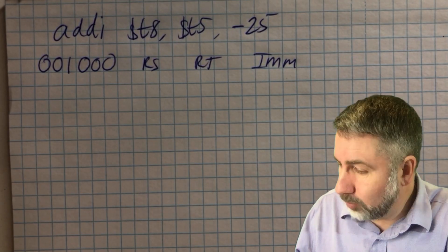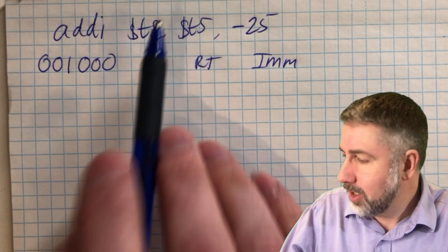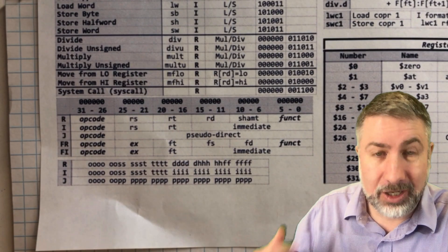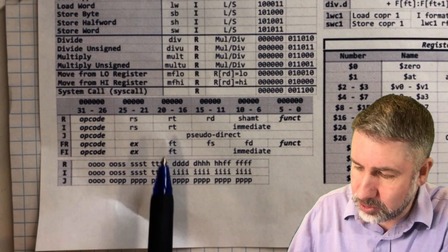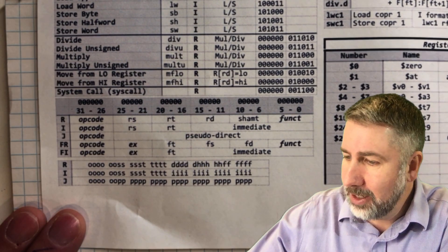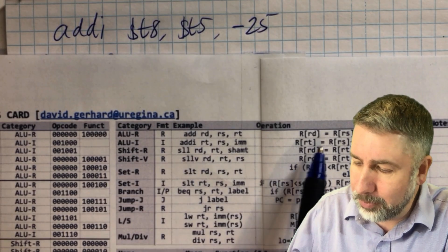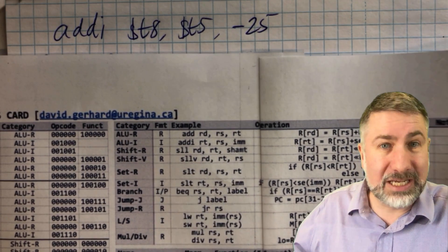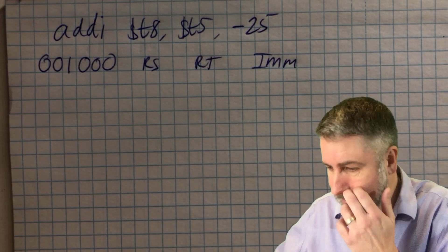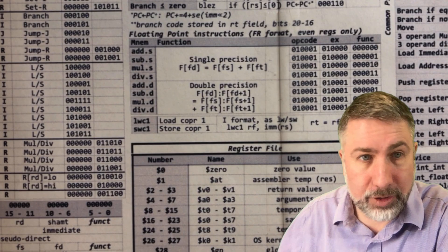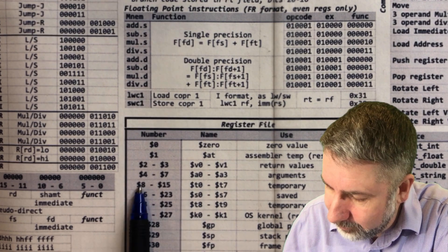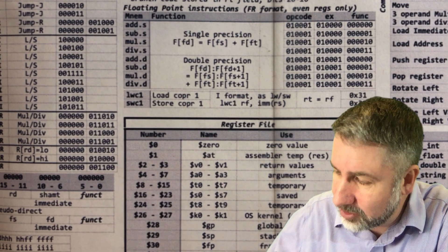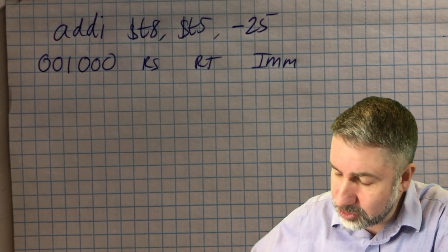Now what's RS and RT? These are the two registers, but don't forget — it's very frustrating — they're usually in the opposite order in assembly code versus machine code. The assembly code lists the destination first, but for immediate instructions RS comes before RT in the encoding. So we need T5 for RS and T8 for RT. T0 is register 8, T7 is 15, so T6 is 14, T5 is 13. So T5 is 13 — that's RS.